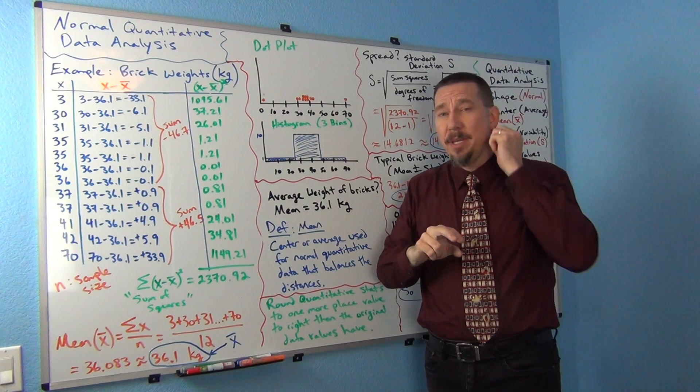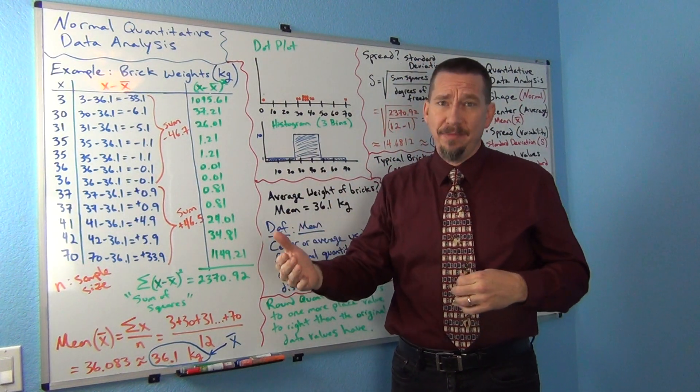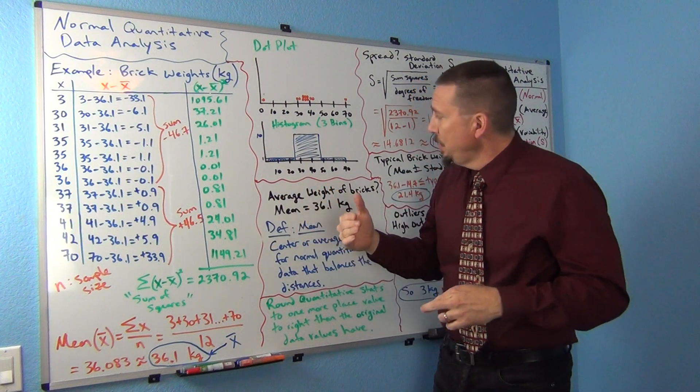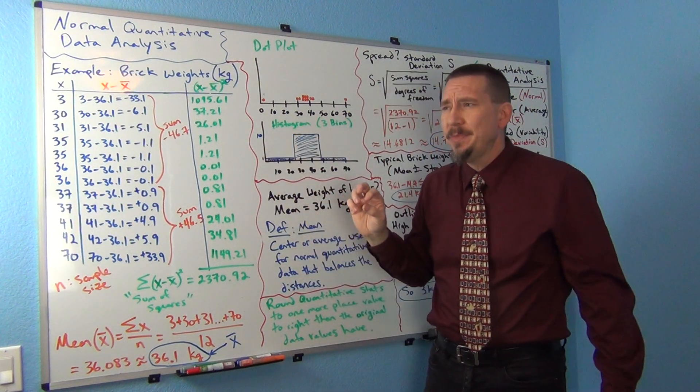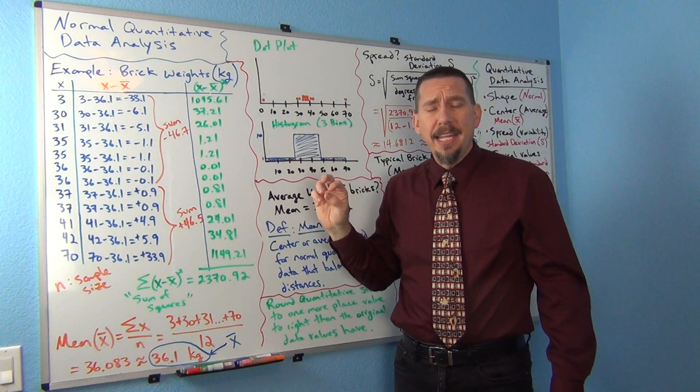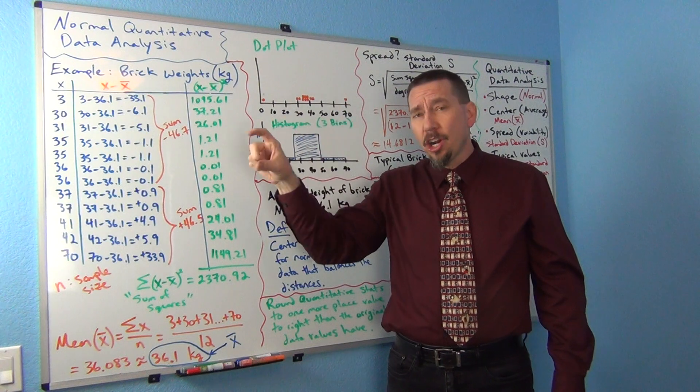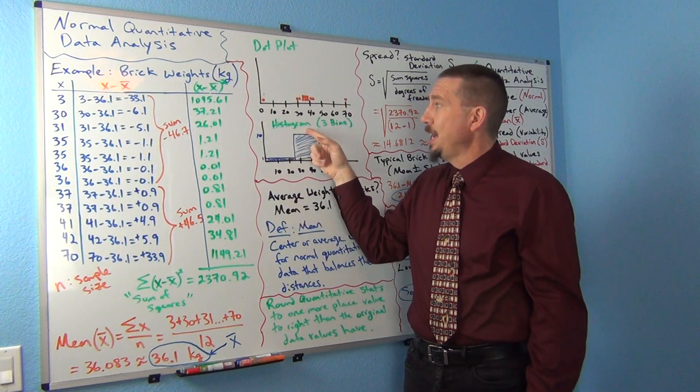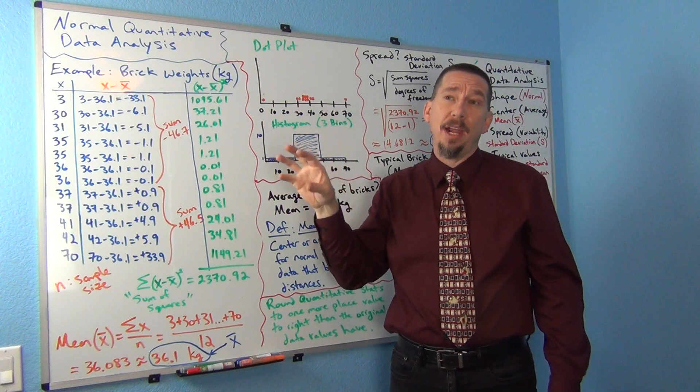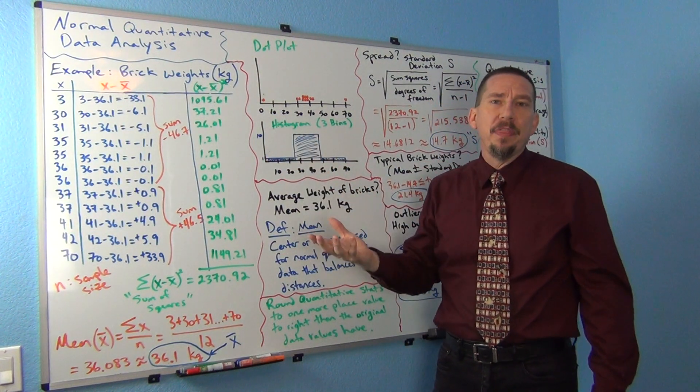Another graph that the computer can calculate for you that's actually a much easier graph to deal with shape is what we call a histogram. Think of this as a bar graph that's used for quantitative data. Be careful, a bar chart is a bar graph for categorical data. A histogram is actually a bar graph that's specially designed for quantitative data.